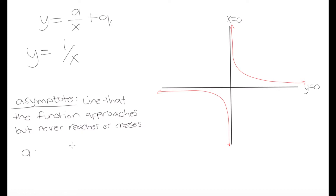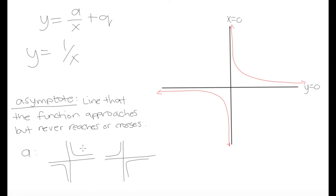The value of a tells us which two quadrants our curves are going to lie in. We will always have two curves when dealing with hyperbolic functions, and those two curves are either going to be present in quadrants one and three, or in quadrants two and four. If a is positive, we are going to have our two curves in quadrants one and three. If a is negative, we are going to have our two curves in quadrants two and four.